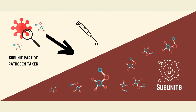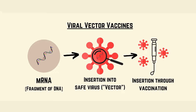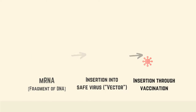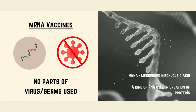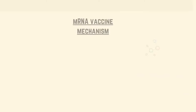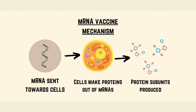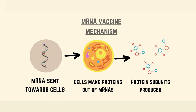A subunit or conjugate vaccine uses a fragment of the pathogen to create an immune response. Viral vector vaccines use DNA or RNA to instruct cells to make germ antigens. The genetic material is wrapped in a different safe virus. The difference with mRNA vaccines is that mRNA vaccines don't have any physical parts or subunits of the virus; instead, they have a strand of RNA that encodes particular parts of the virus.